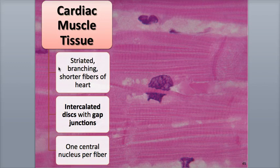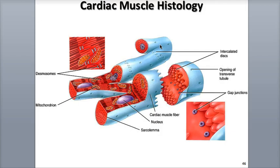Cardiac muscle cells, also called fibers, like in skeletal muscle tissue, are shorter than skeletal muscle fibers and are branched, which gives them sort of a zigzag-like appearance.